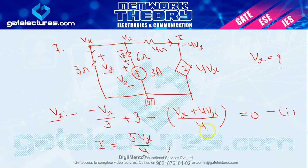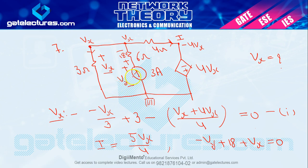Clockwise KVL for Vy: −Vy + 18 + Vx + Vx = 0. Vx already known, 6 ohm across = 18V — so using KVL with these 3 elements, Vy can be calculated. This completes finding both I and Vy for this nodal analysis question.